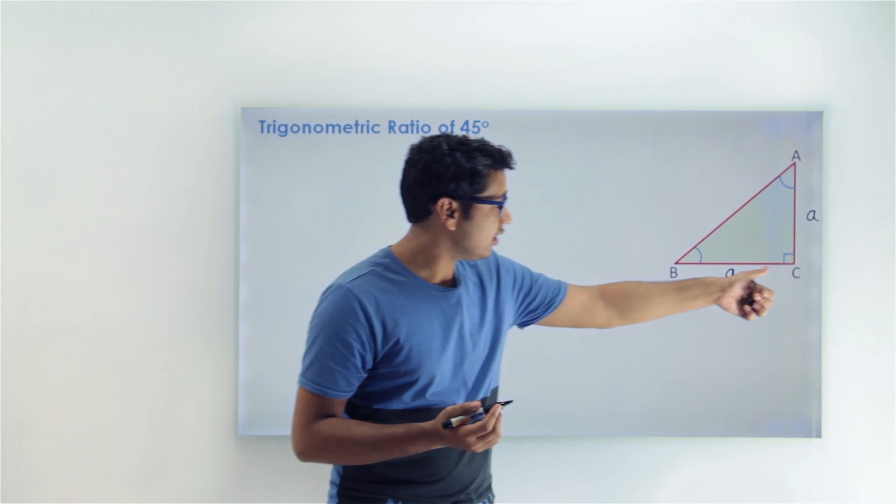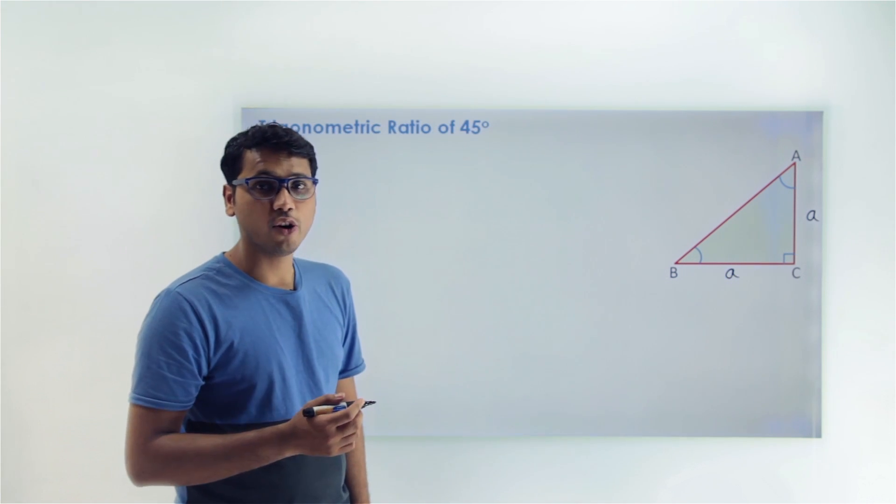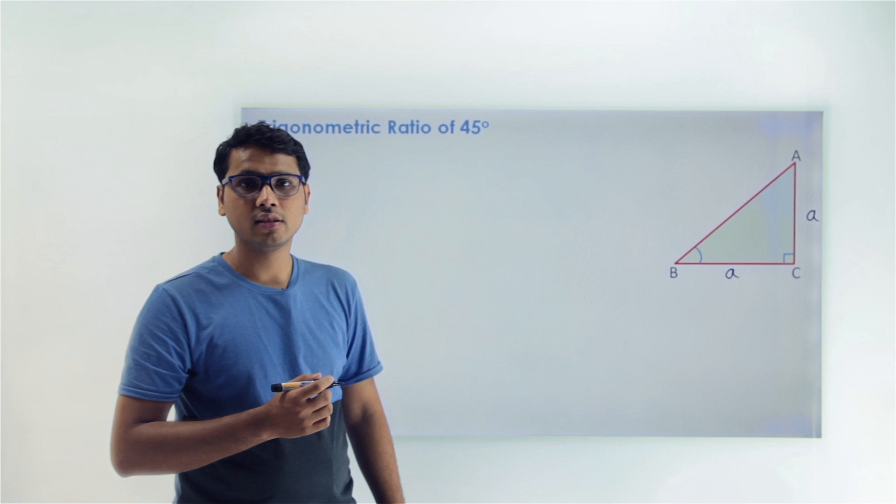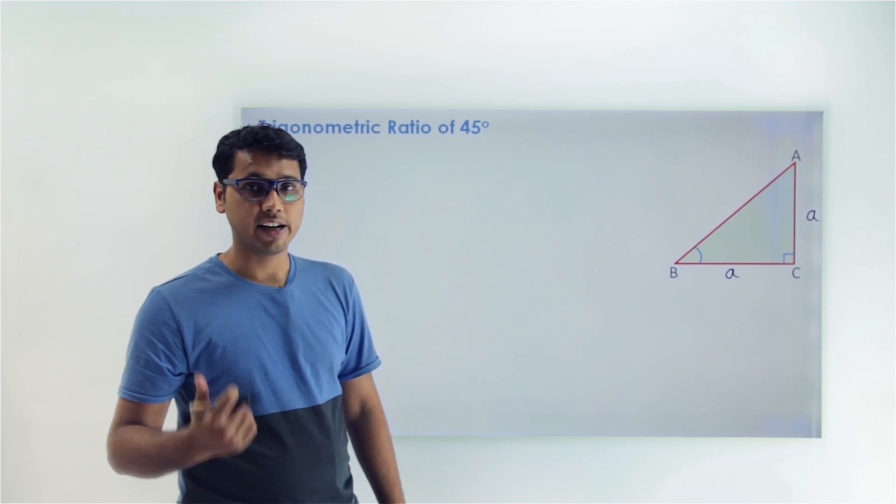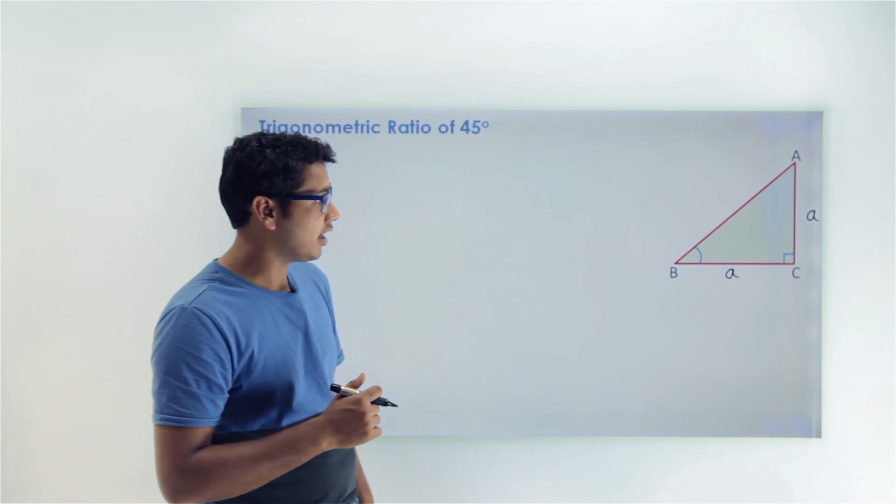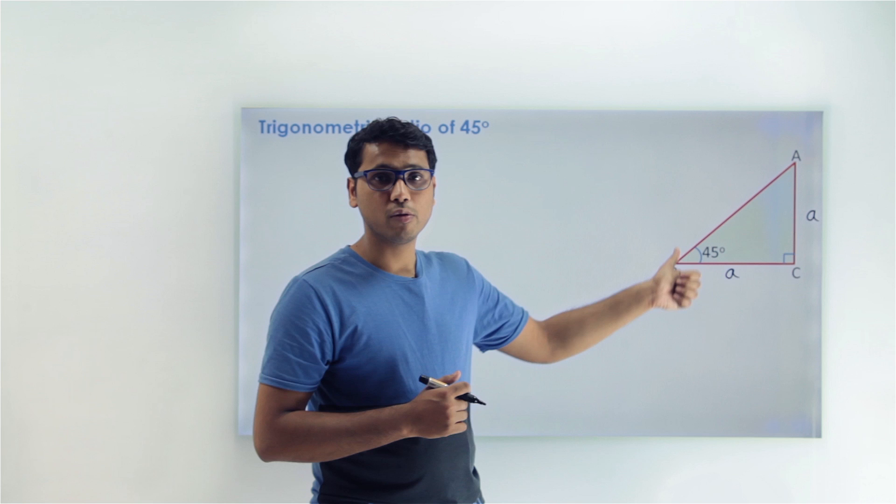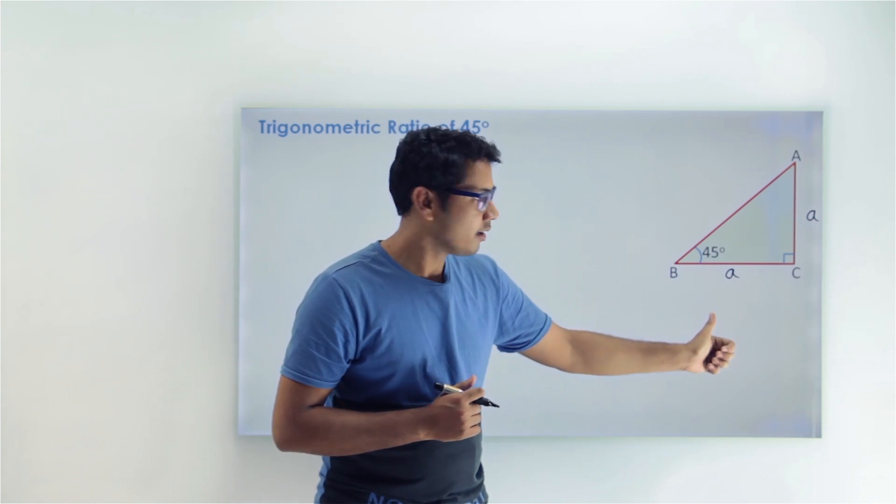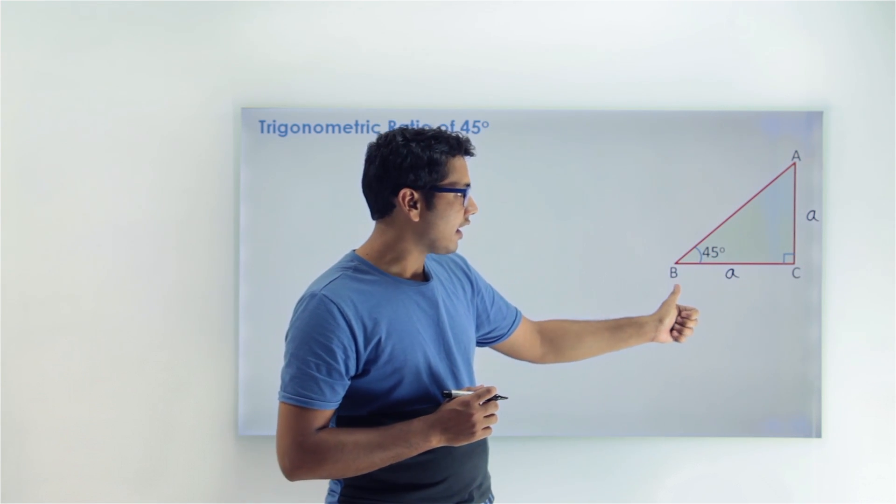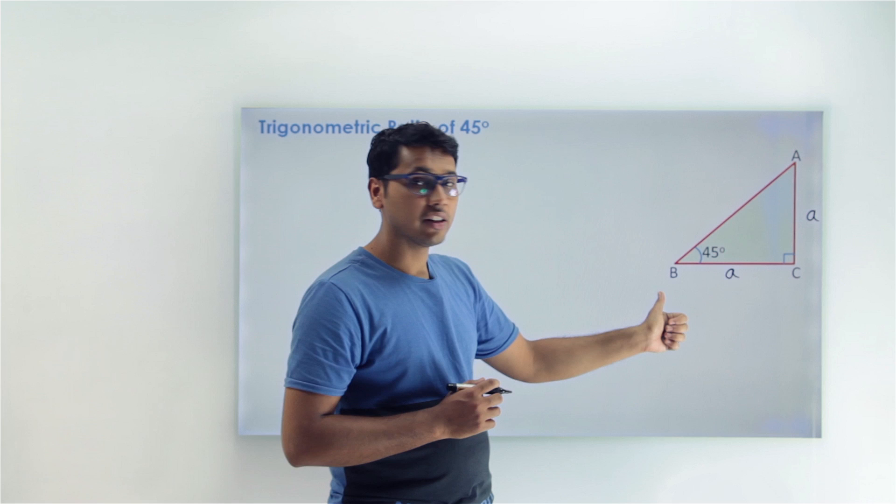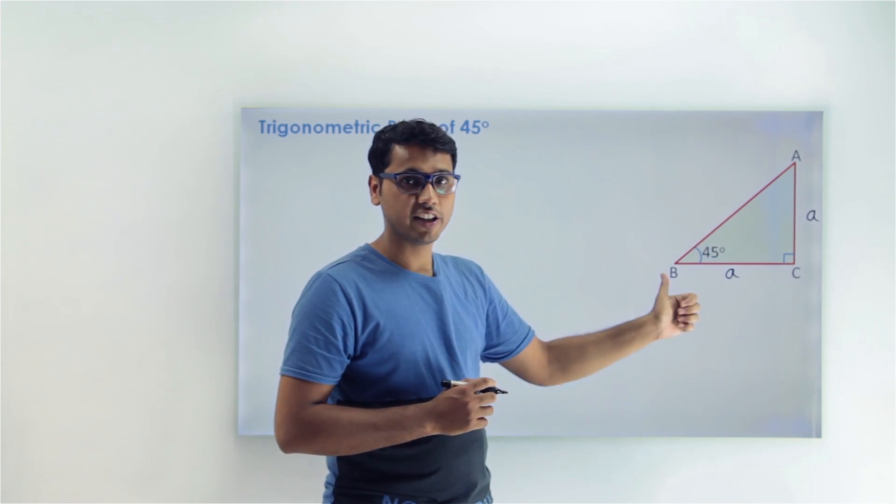And since one angle is 90 degrees, these two angles sum will be 90 degrees. And hence angle B will come out to be 45 degrees. Now we can easily calculate the value of hypotenuse here.